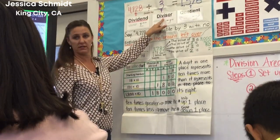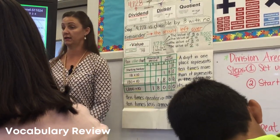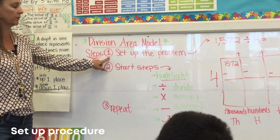So the smaller number which is the divisor is usually the number you are skip counting by when we're dividing for the area model. So step number one, what are we gonna do everyone?